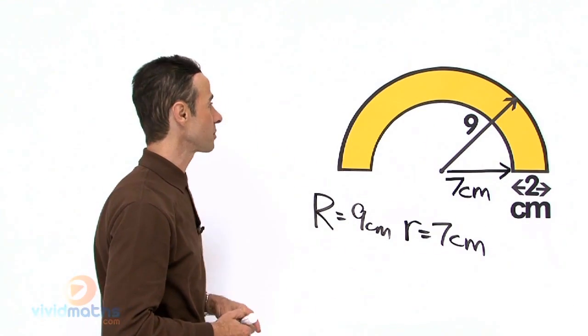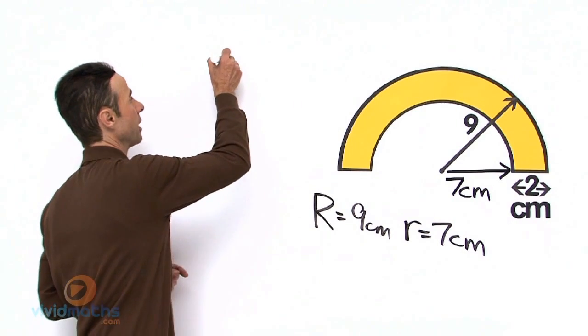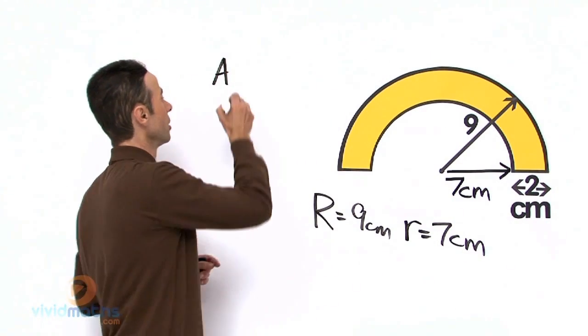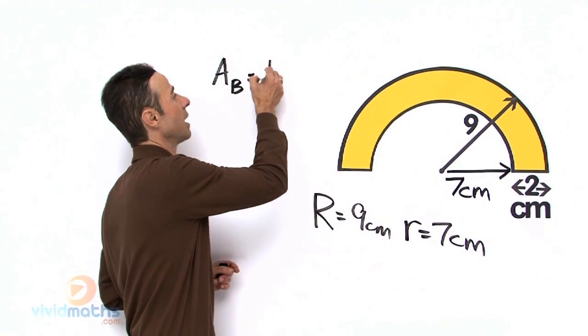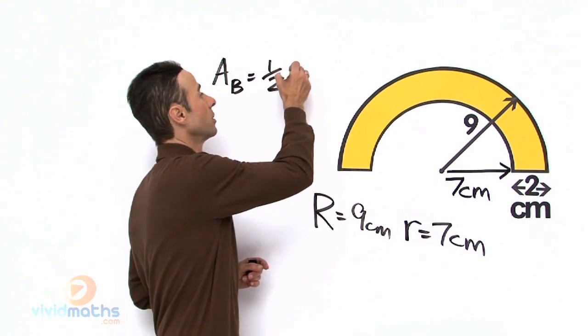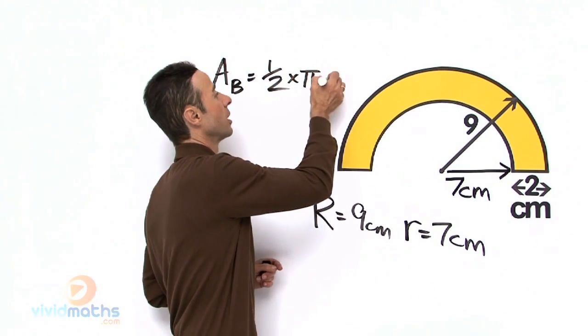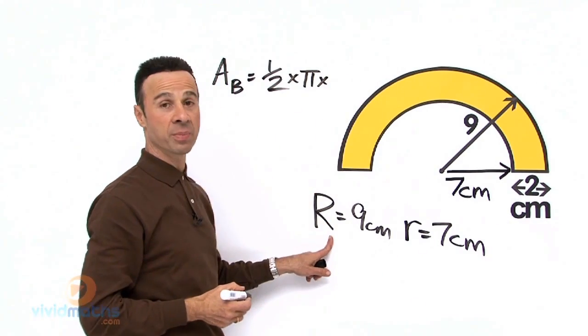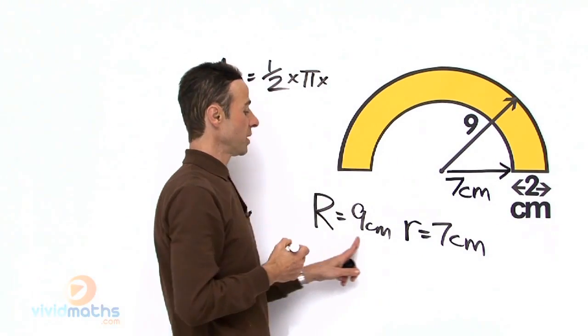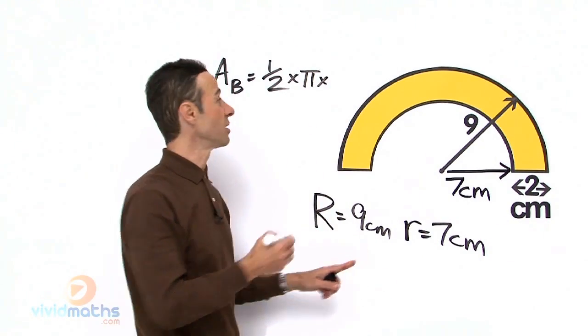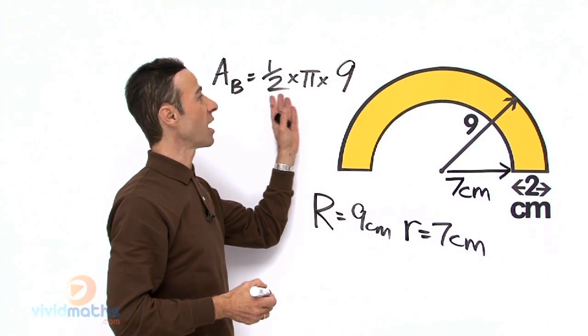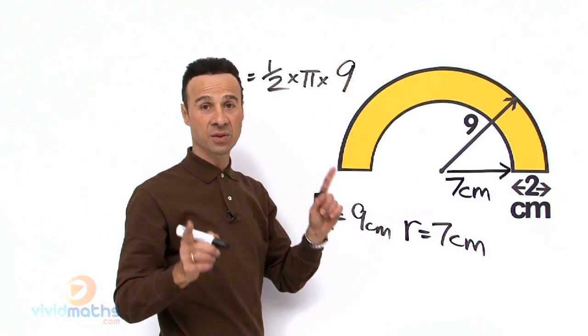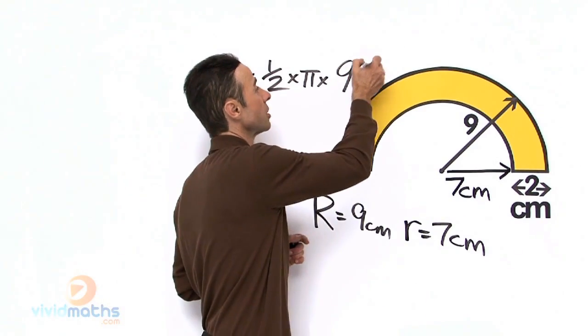So let us do that. So let us work out the area of the big semicircle which equals 1 half because it is a semicircle times pi times r squared and that will be big R, so big R equals 9 cm. And notice in the example it is a half pi r squared, that is the formula for a semicircle so we square that.